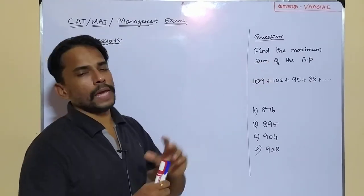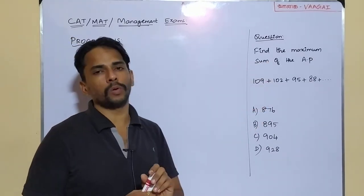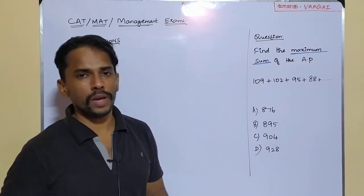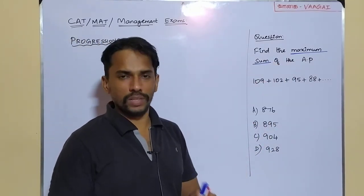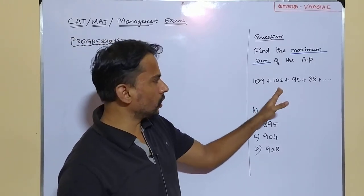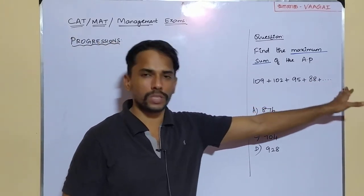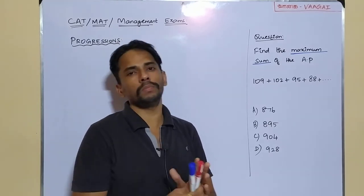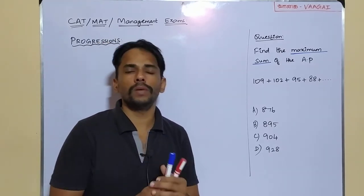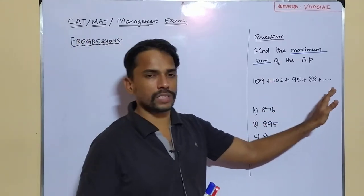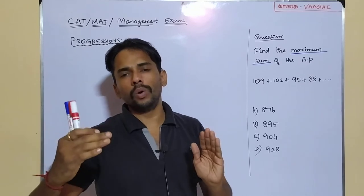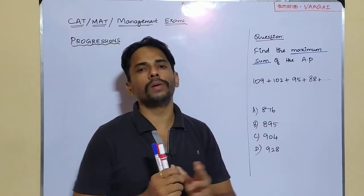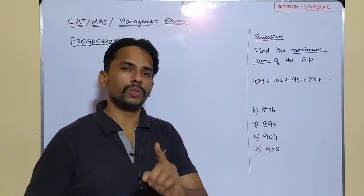Find the maximum sum of the given AP. We are given an arithmetic progression and asked to find what is the maximum sum. Our given series is 109 plus 102 plus 95 plus 88 and so on. What do we mean by maximum sum? That means we need to find the sum up to some particular terms where that sum would be the maximum we can get from this arithmetic progression.